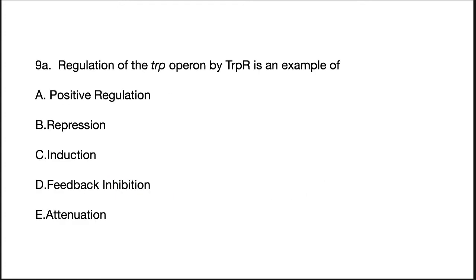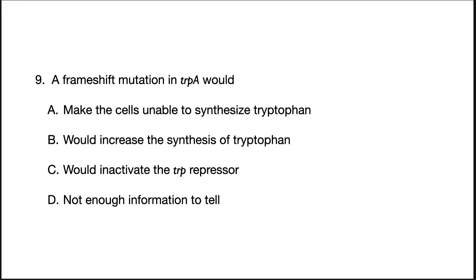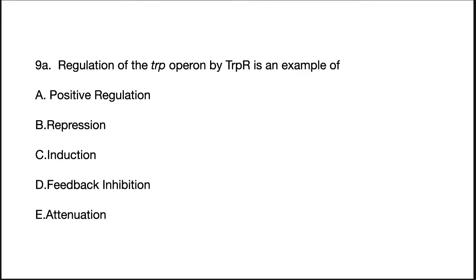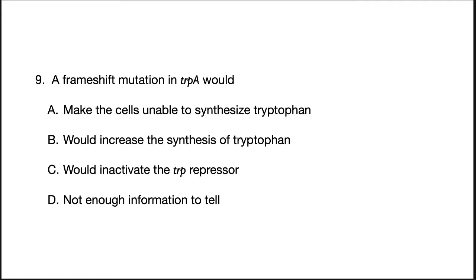All right, so here are some questions. Regulation of the TRIP operon by TRIP-R is an example of? A frameshift mutation in TRIP-A would? A deletion mutation of the TRIP-R gene would? Let's go back and answer these questions. Regulation of the TRIP operon by TRIP-R is an example of repression. The repressor is synthesized in an inactive state and binding of the co-repressor, tryptophan, activates it. It is negative regulation since binding of TRIP-R turns off transcription.